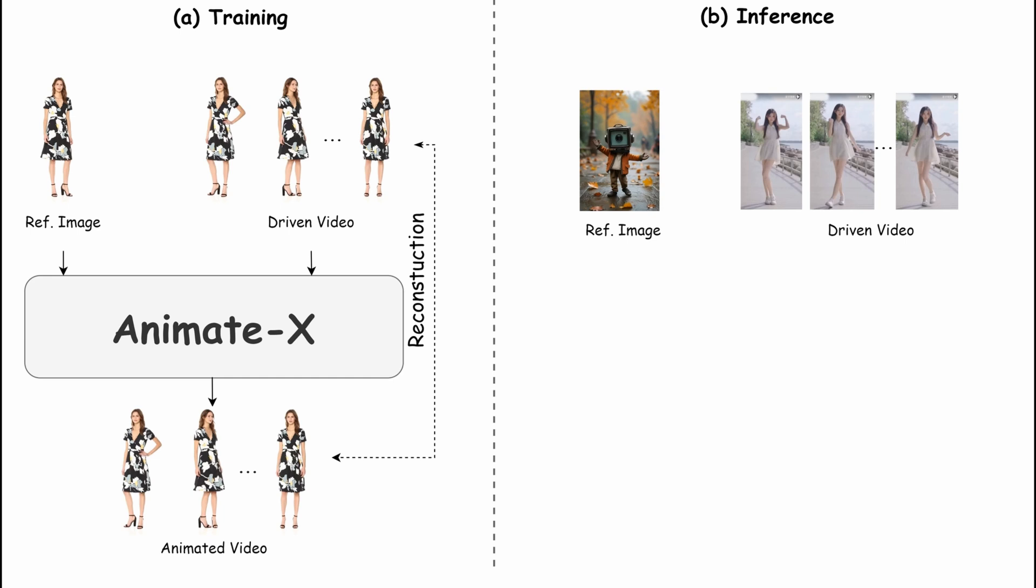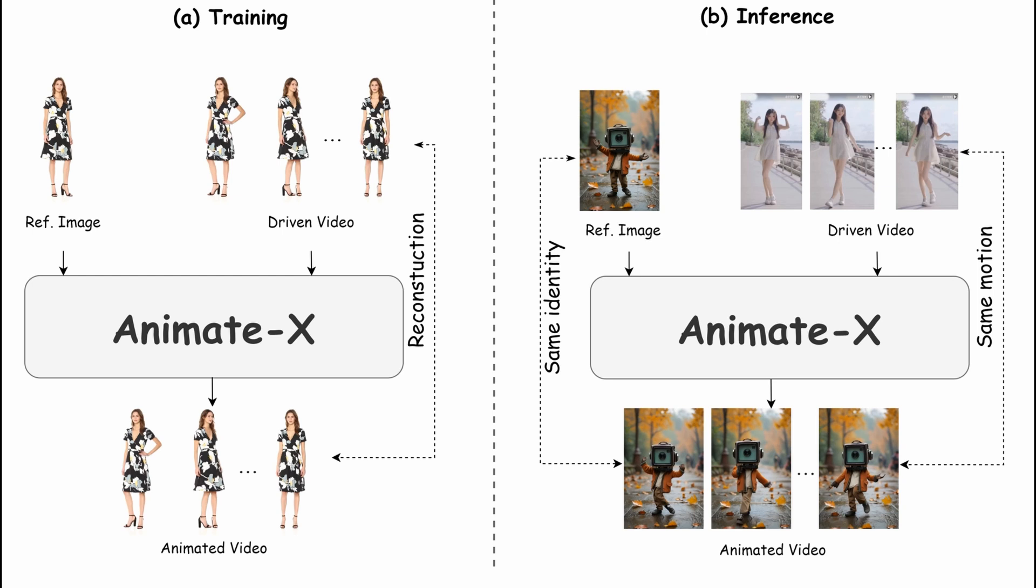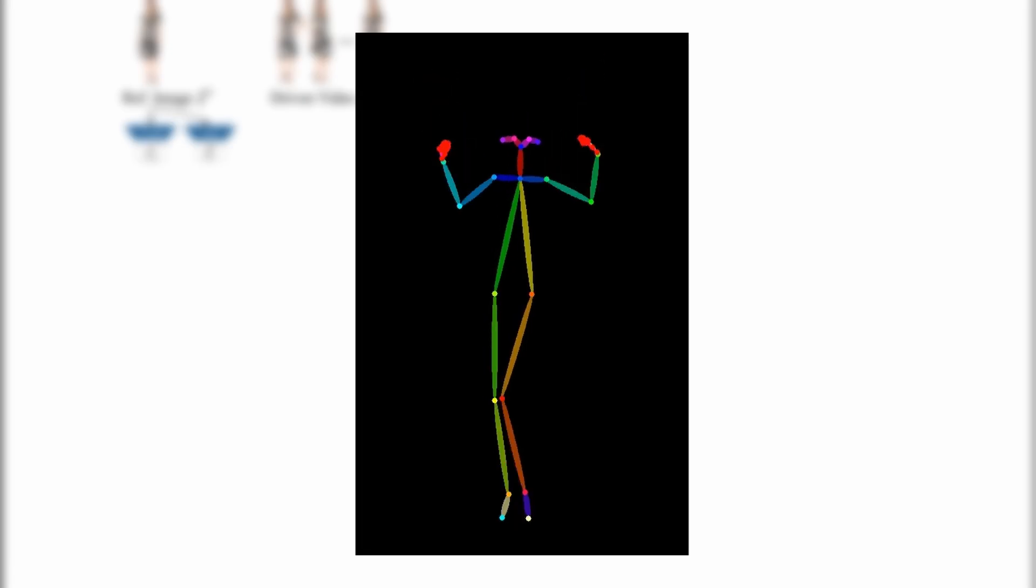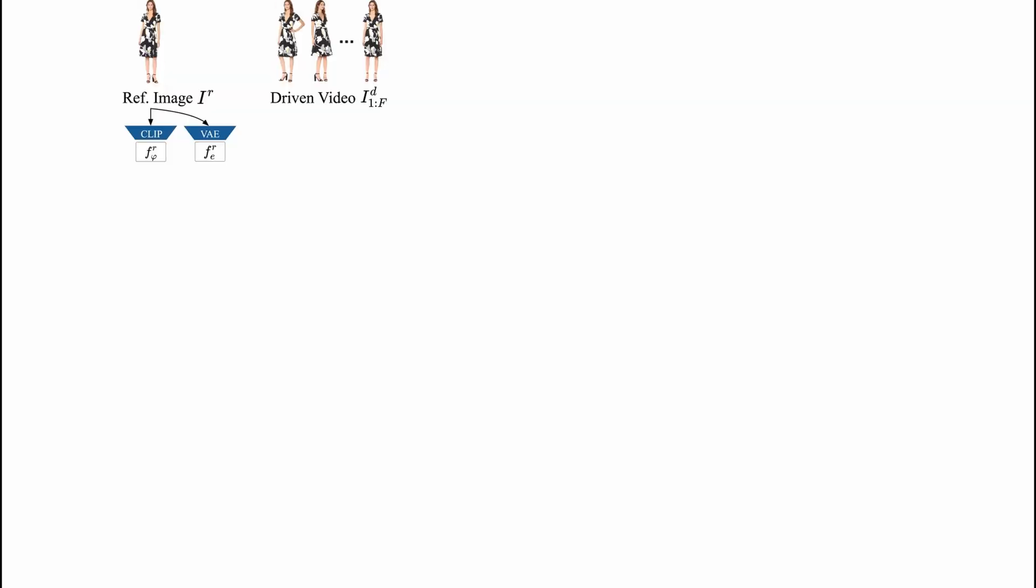The reference video can be of anyone, someone dancing, a person moving, or even you acting out the movement. Next, the reference video is converted into a pose video, which is basically a skeleton model of the movement in the video. This pose video is then processed in two different ways.